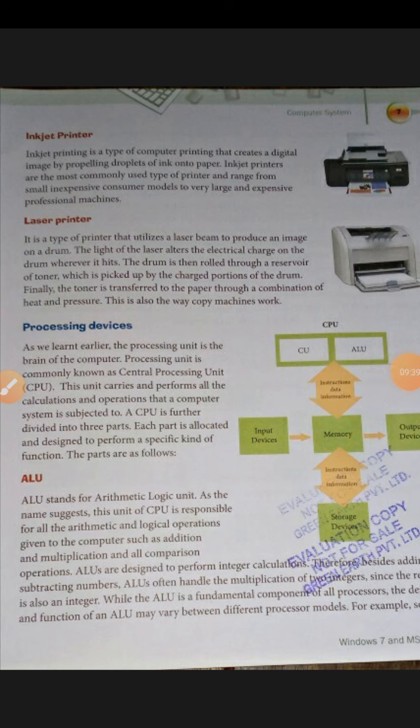The second output device is the inkjet printer. An inkjet printer is a type of computer printer that creates a digital image by propelling droplets of ink onto paper. Inkjet printers are the most commonly used type of printer and range from small, inexpensive consumer models to very large professional machines.